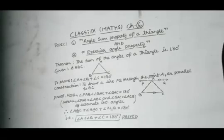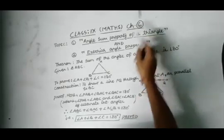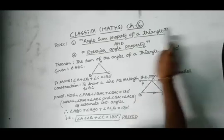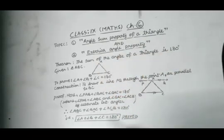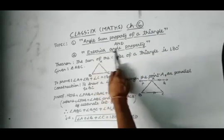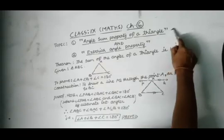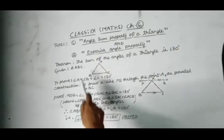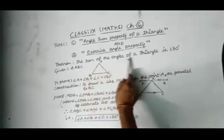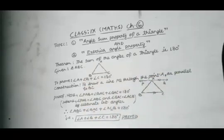Hello everyone, today we will start with the next topics from chapter number 6. The very first one is angle sum property of a triangle and the second one is exterior angle property. On the first topic, we have a theorem that the sum of the angles of a triangle is 180 degrees. This means for a triangle, the sum of all three of its interior angles is always 180 degrees.